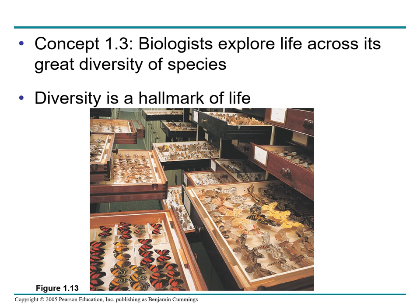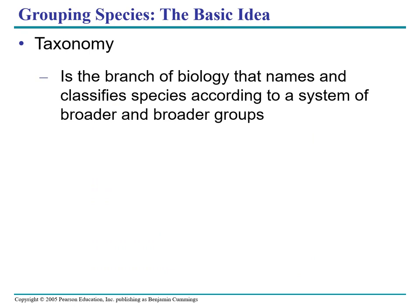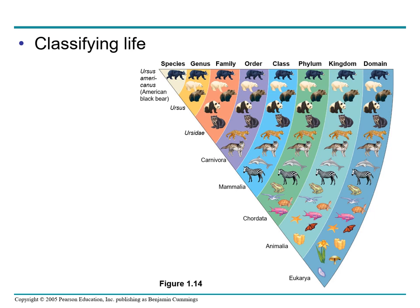Next concept: biologists explore life across its great diversity of species. Diversity is the hallmark of life. Theodosius once said, nothing in biology makes sense except in the light of evolution. To understand evolution, we must understand the diversity of life on the planet. Taxonomy is the branch of biology that names and classifies species according to a system of broader and broader groups. There are seven major levels of classification: kingdom, phylum, class, order, family, genus, and species.